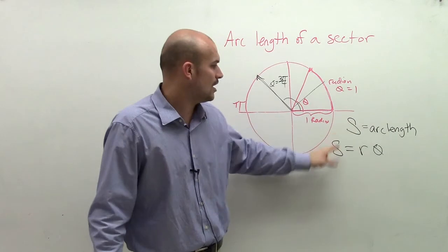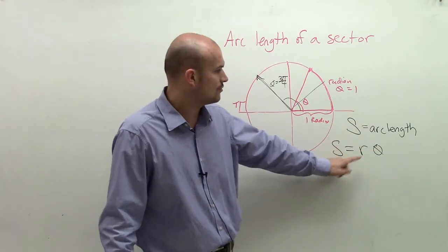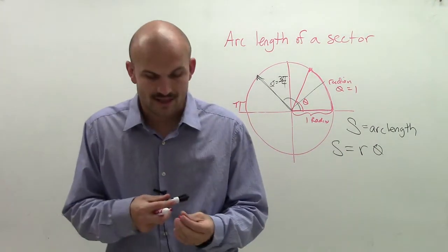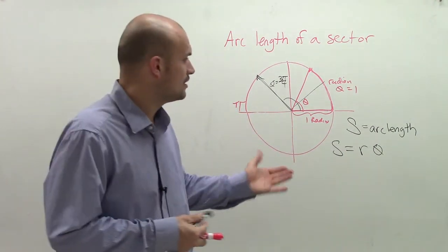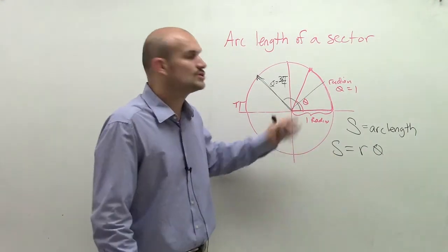So for arc length, for any arc length, for any radius and theta, what you're going to do is arc length equals your radius times theta. So no matter what my radius is, or whatever angle or arc length I give you, you can now use this formula to help you solve for your missing term.